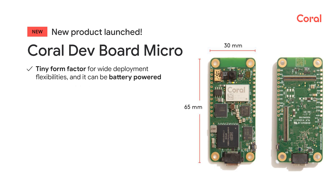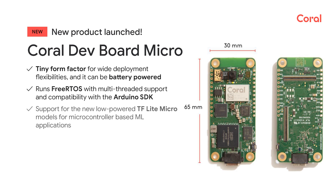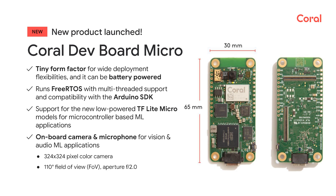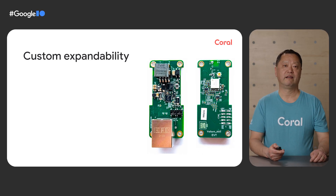Other features include the following: it has a tiny form factor, only 65mm by 30mm in size. It can also be battery powered, even solar powered. It runs the FreeRTOS operating system onboard, which has multi-thread support and is compatible with Arduino's SDK. It supports both TensorFlow Lite and TensorFlow Micro machine learning models. It has an onboard camera and a microphone, making it particularly useful for deploying at the edge without connecting to an extra camera. The built-in camera has a fast f/2.0 lens, a wide angle of 110 degrees, and produces 324-pixel color images and videos.